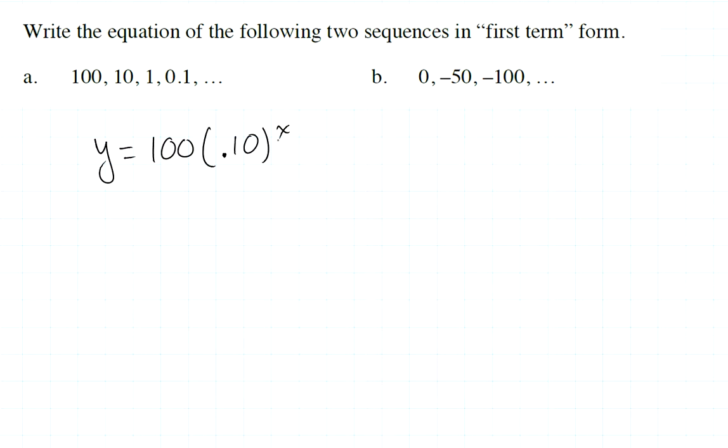Now, that's not first term form, though. That's just the equation. If I put in 0, it would give me the correct value for the first term. In first term form, when you put in 1, because you want to know what the first term is, when I put in 1, it should give me 100. This is not going to give me 100. If I put in 1, it's going to give me the number 10.